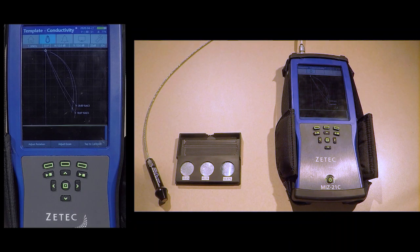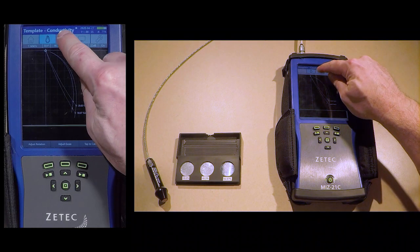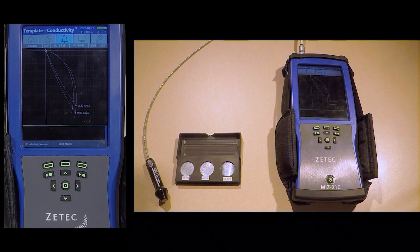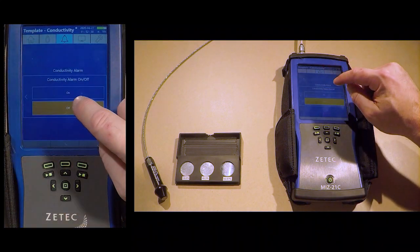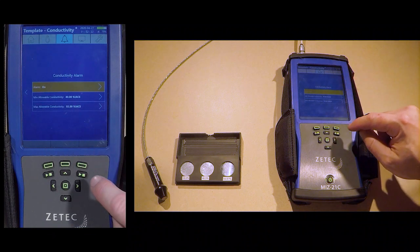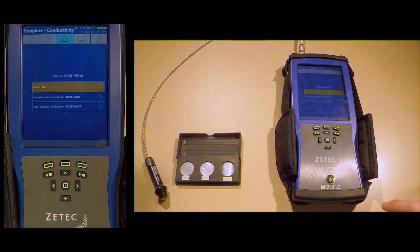To set the alarm, press the Stop Play button if necessary to stop acquisition. Tap the alarm icon. Use the menu items in the lower left of the screen to set your upper and lower limits for both the conductivity IACS and, if desired, coating thickness.